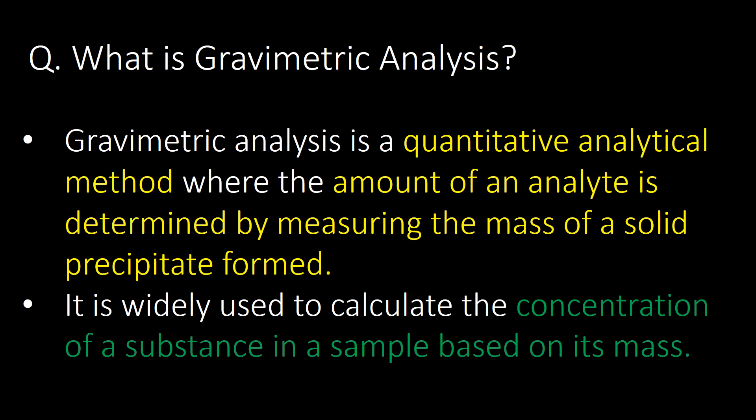Welcome. We will start with some basic questions and then go in detail. First question: what is gravimetric analysis? Gravimetric analysis is a quantitative analytical method where the amount of an analyte is determined by measuring the mass of a solid precipitate formed. It is widely used to calculate the concentration of a substance in a sample based on its mass.